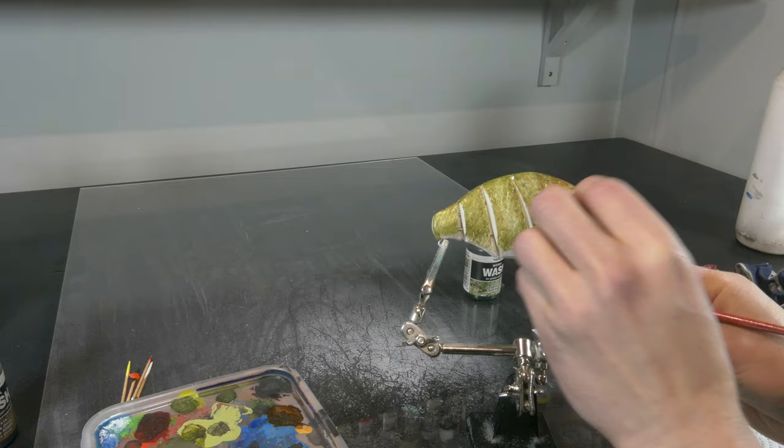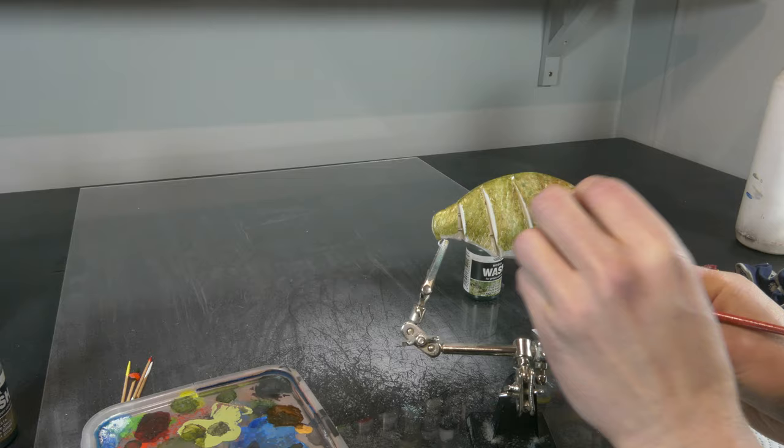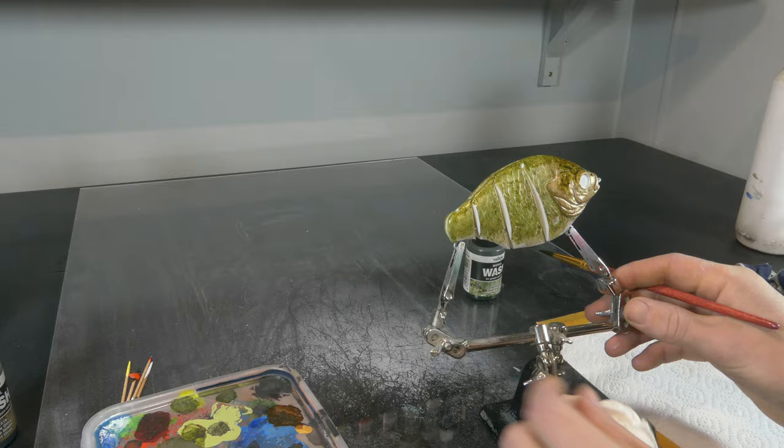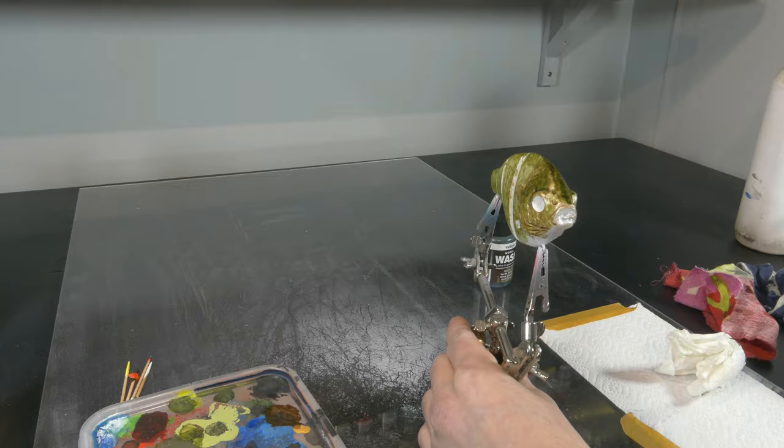Now I'm doing the same thing again with the Vallejo model wash dark green and olive green, just applying some texture, dabbing it off, and leaving a little bit more wash here and there to dry up to create darker tones. And I'm just using my airbrush to blow dry all the wash so that we can proceed to the next step.